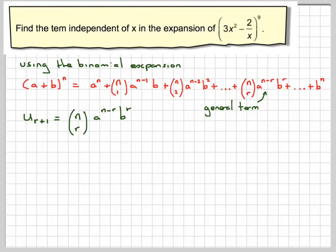So, the general term is ncr, a to the n minus r, b to the r. So we need to find a term which is independent of x. So there will be some term where the x's cancel out, we'll just be left with a number. And we've got to find the value of r where that happens.